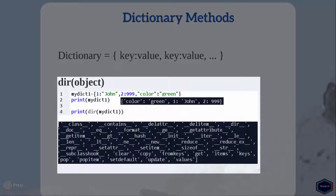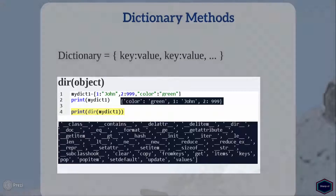In this example, I have created a dictionary object, myDictionary1, which contains three different key-value pairs. Now when I call the built-in function directory on my dictionary object, it will return a list of all dictionary methods. The methods which start and end with double underscore are called special methods, and they are not dictionary-specific methods. However, I have covered these methods in one of my other tutorials.